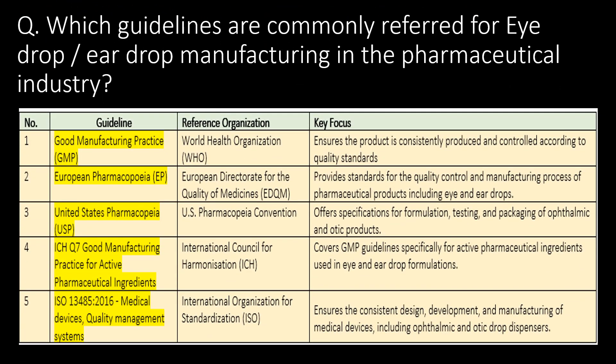Very important question: which guidelines are commonly referred to for eye drop or ear drop (ophthalmic product) manufacturing in the pharmaceutical industry? First, Good Manufacturing Practice (GMP); second, European Pharmacopoeia (EP); third, United States Pharmacopoeia (USP); fourth, ICH guideline Q7 on Good Manufacturing Practice for Active Pharmaceutical Ingredients; and ISO 13485:2016 are the commonly referred guidelines for eye drop or ear drop manufacturing.